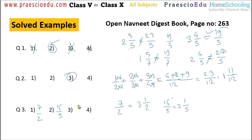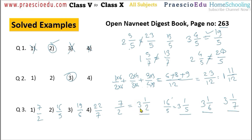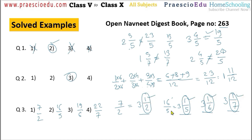Option 3: 19 by 6 — 6 threes are 18 with remainder 1, giving 3 and 1 by 6. Option 4: 22 by 7 — 7 threes are 21 with remainder 1, giving 3 and 1 by 7. All options have the same whole number 3, so we compare only the fractional parts: 1 by 2, 1 by 5, 1 by 6, and 1 by 7. Since all numerators are the same, the fraction with the largest denominator is the smallest. The largest denominator is 7, so option number 4 is the smallest — option 4 is correct.